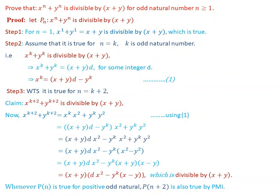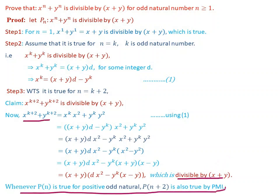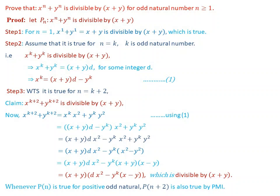Taking x plus y as common, this is the required result. That is, x to the power of k plus 2 plus y to the power of k plus 2 is divisible by x plus y. So whenever P(n) is true for a natural number, P(n plus 2) is also true. By the Principle of Mathematical Induction, the result is proved.